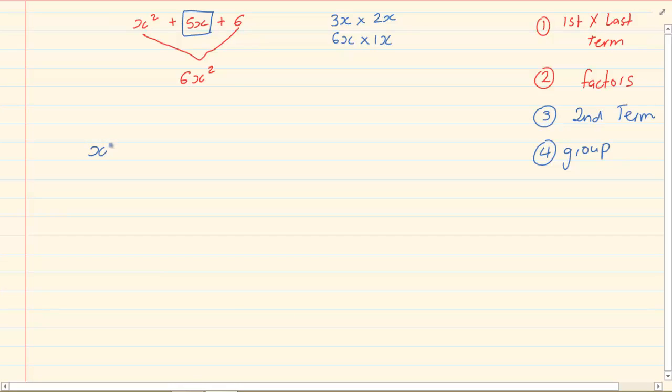So, what we're going to have is x squared plus 3x plus 2x plus 6. What we've done is, we've split the 5x into 3x plus 2x. And how did we get 3x plus 2x? We know when we multiply it, then we will get 6x squared. Now, let's do grouping.